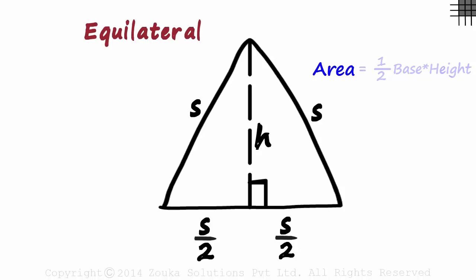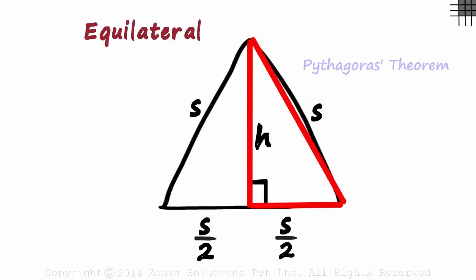We know that the area can be written as one half base times its height. The base is already in terms of s. Now if we manage to get the height h in terms of s, our life will become a lot easier. Now how can we get h in terms of s? Look at this right triangle. Can we use the Pythagoras theorem to get h in terms of s? Let's see.